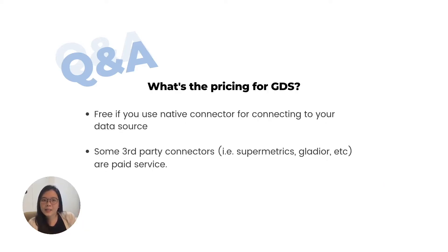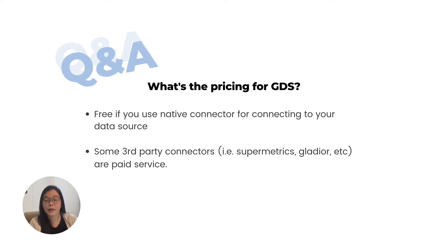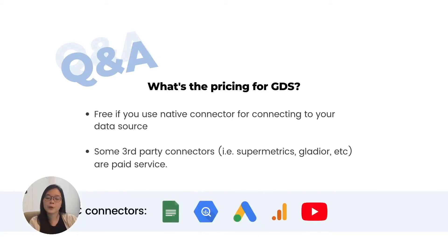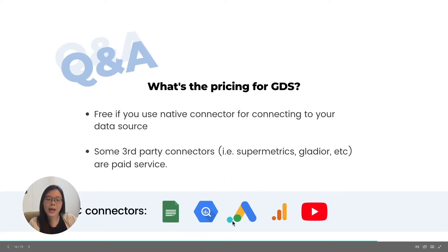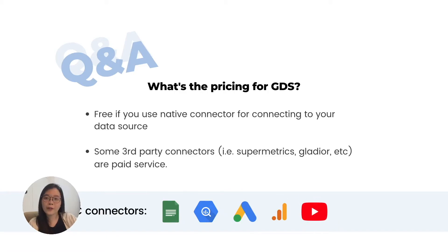What's the pricing for GDS? It's completely free if you use native connectors to connect your data. However, if you are using some third-party connectors like Supermetrics or Gladia, they are paid services which means they will be maintaining and developing the connector in order for you to connect to the data source that you want. So if there are any available native connectors for your data source, you don't have to pay to use GDS for your reporting. Here are some examples of free-of-charge connectors: Google Sheets, BigQuery, Google Ads, Google Analytics, and YouTube. We will cover in more detail where you can find these connectors in Chapter 2.